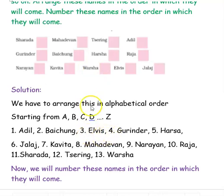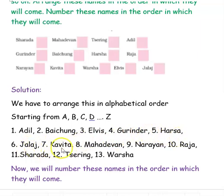F is not there, so it is G — Gurinder. Then H — Harsha. The sixth one, J — it is Jalaj. The next alphabet is K, so it is Kavita.